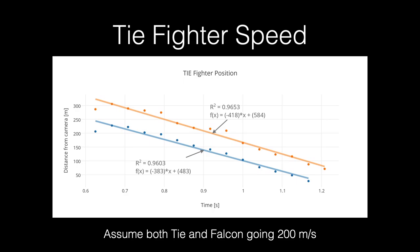Here's what I get for those two TIE fighters — there aren't many frames, but their position gets closer at a fairly constant rate. Fitting a linear function, the slope gives velocity: one TIE fighter is at 383 meters per second and the other at 418, so call it 400 meters per second relative to the Millennium Falcon. Since they're probably going about the same speed as the Falcon, the approach speed would be 400 m/s, meaning the Millennium Falcon is going about 200 meters per second.